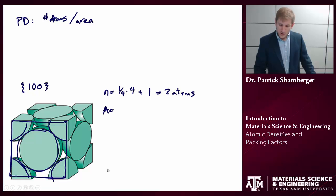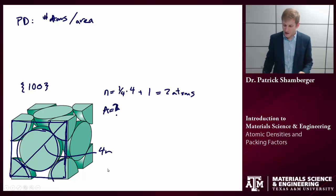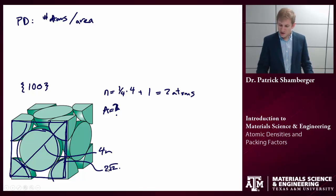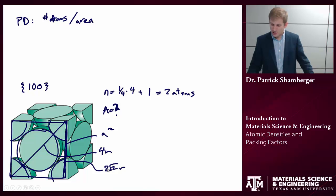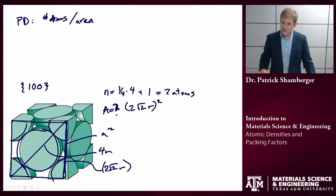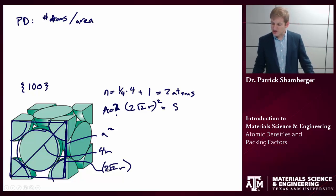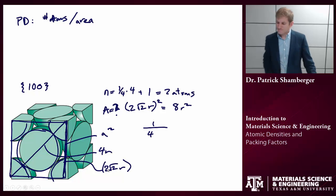What is the area? I know this hypotenuse is 4r, and each of these legs are 2√2r — I just calculated that. The area is going to be a squared, where a is the length of one side, and a is 2√2r. So the area equals (2√2r)² equals 8r². So the planar density for the [1,0,0] plane is 2 atoms over 8r², which equals 1 over 4r².